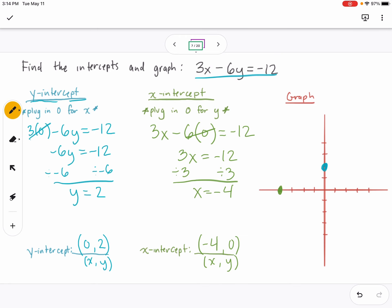In Edgenuity, when you graph those two points, it automatically gives you the line. So that's what you're going to be doing: find the y-intercept, give your answer as a point, find the x-intercept, give your answer as a point, and then plot them on the graph.